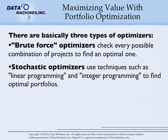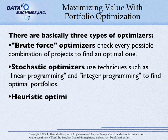Stochastic optimizers use techniques such as linear programming and integer programming to find optimal portfolios. These work well for larger portfolios, but can also become time-prohibitive for very large portfolios.